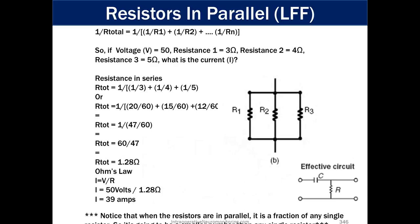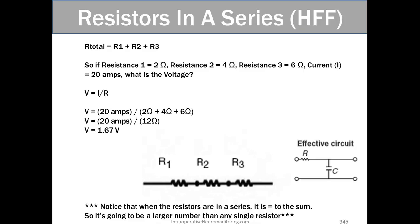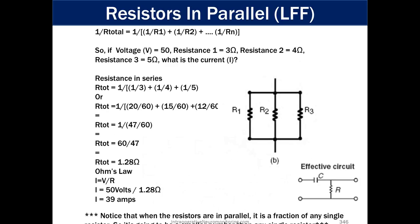And here's resistors in parallel, which we see in low-frequency filters, whereas resistors in series we see in high-frequency filters. 1 over the resistance total equals that equation there. It can go out, depending on how many resistors you have. So if we're giving a voltage of 50, resistance of 1 equals 3 ohms, resistance 2 equals 4 ohms, resistance 3 equals 5 ohms, what is the current intensity? Resistance in series equals R total over 1 divided by all the resistors added together over 1. Or R total equals 1 over 20 divided by 60 plus 15 divided by 60 plus 12 divided by 60. Or R total equals 1 over 47 plus 60, because 20 plus 15 plus 12 equals 47. Or the R total equals 60 over 47, because we had that we just bring the denominator to the top there. Or the R total equals 1.28 ohms.